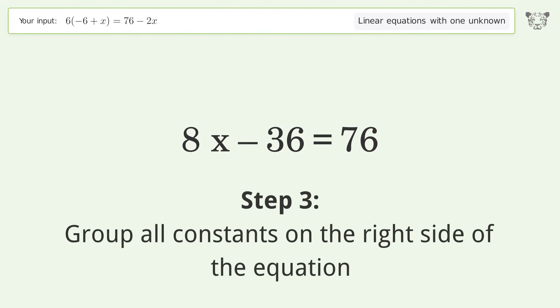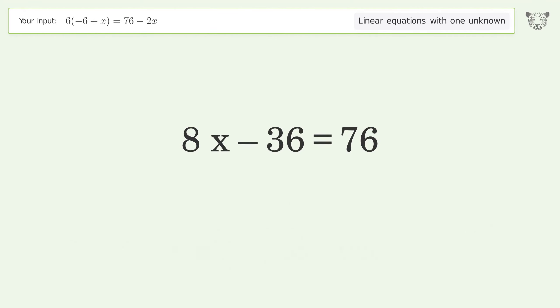Group all constants on the right side of the equation. Add 36 to both sides. Simplify the arithmetic.